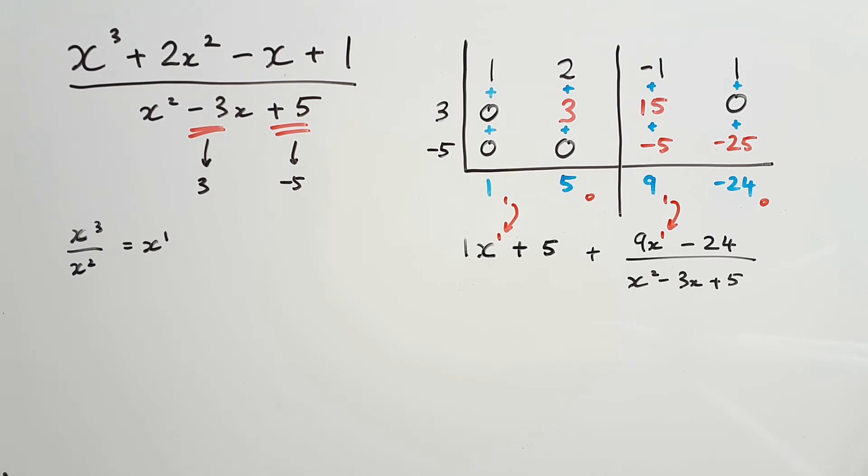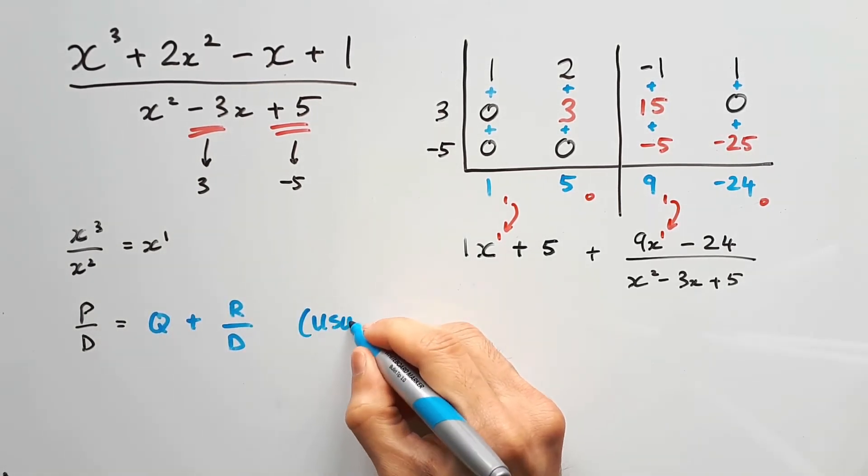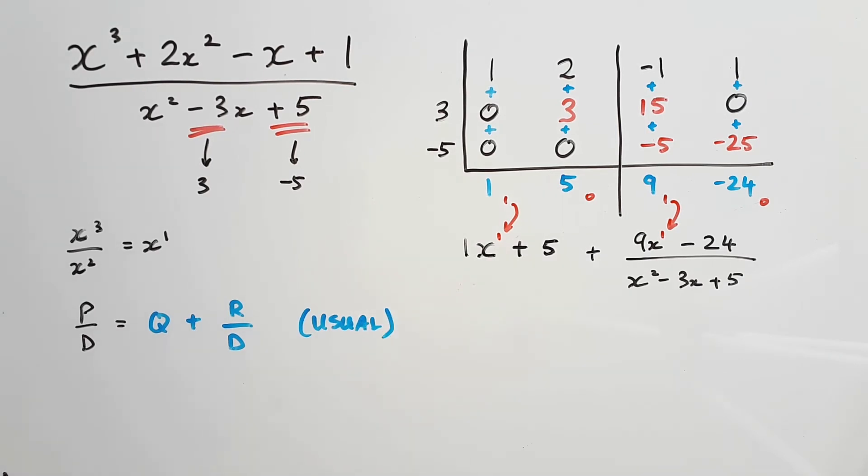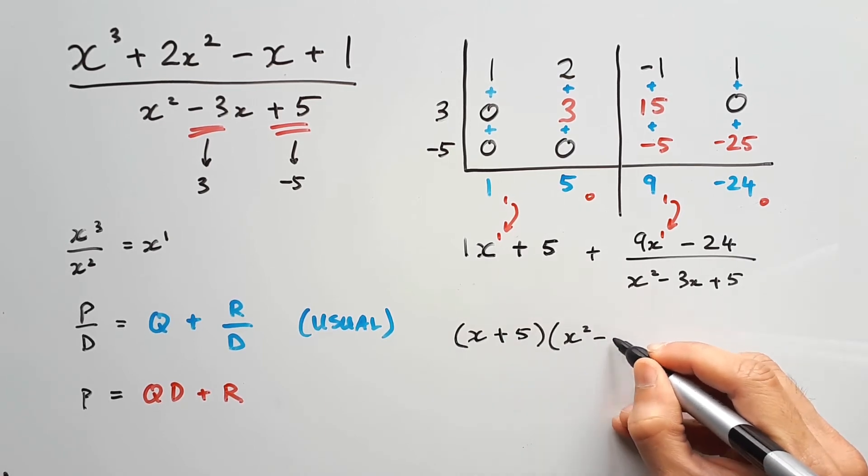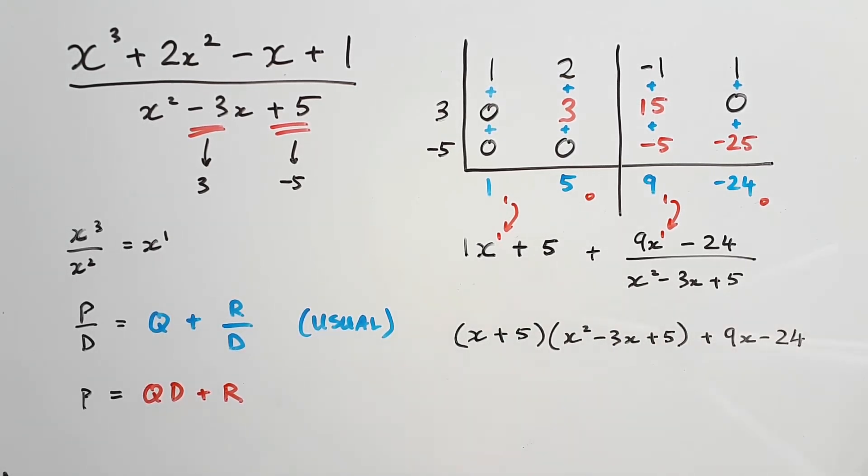But keep in mind that this is only one form. This is the form you get when you do your division, right? So the quotient would add the remainder over the divisor. If you wanted to write the other form, which is basically the polynomial being rewritten or rephrased, that would be your quotient multiplying your divisor, adding your remainder, which is not the usual format. So that would be x plus 5 times x squared minus 3x plus 5 plus 9x minus 24.